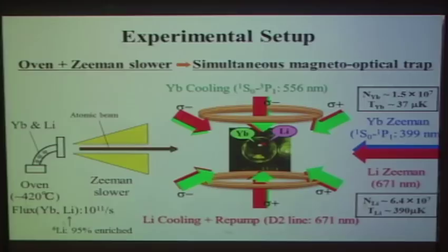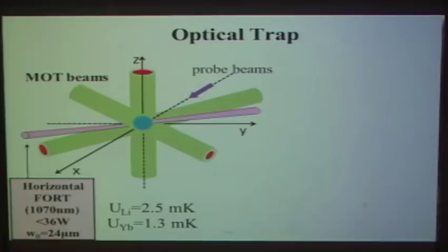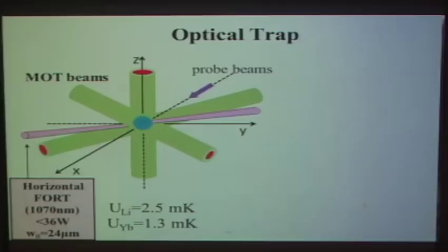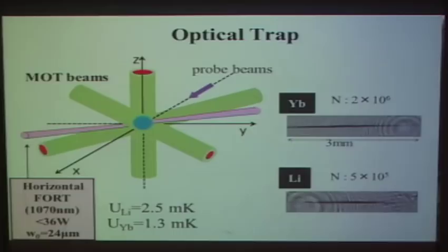The next step is the transfer of atoms from the MOT into the optical dipole trap. We used optical trap beams with specific parameters. The maximum trap depth for Lithium is about 2.5 mK and for Ytterbium is 1.3 mK. With this setup we could successfully transfer the mixture from the MOT into the optical dipole trap.